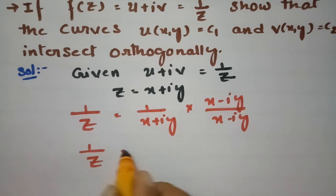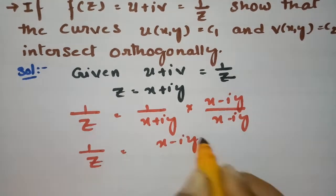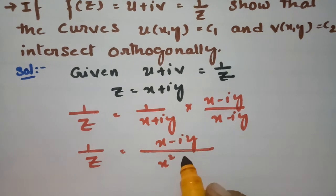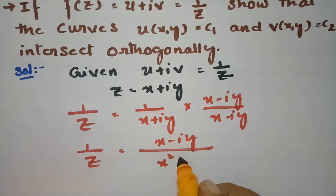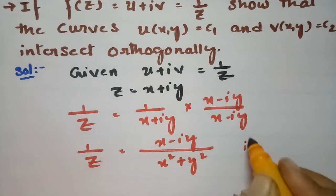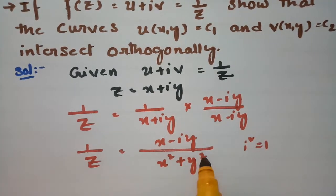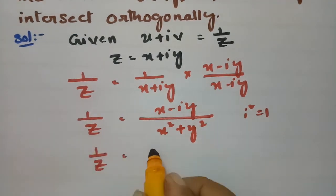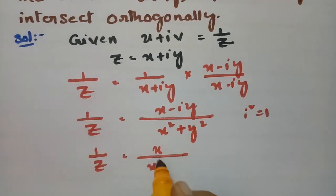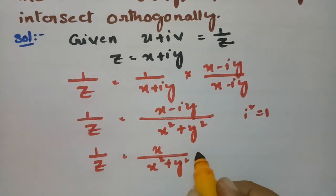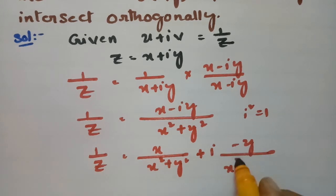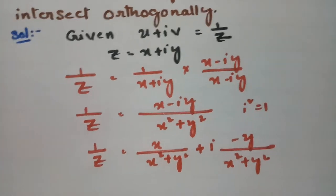So 1/z = (x - iy) divided by (x² + y²), since i² = -1, which gives x² + y² in the denominator. So 1/z equals the real part x/(x² + y²) plus i times the imaginary part -y/(x² + y²).